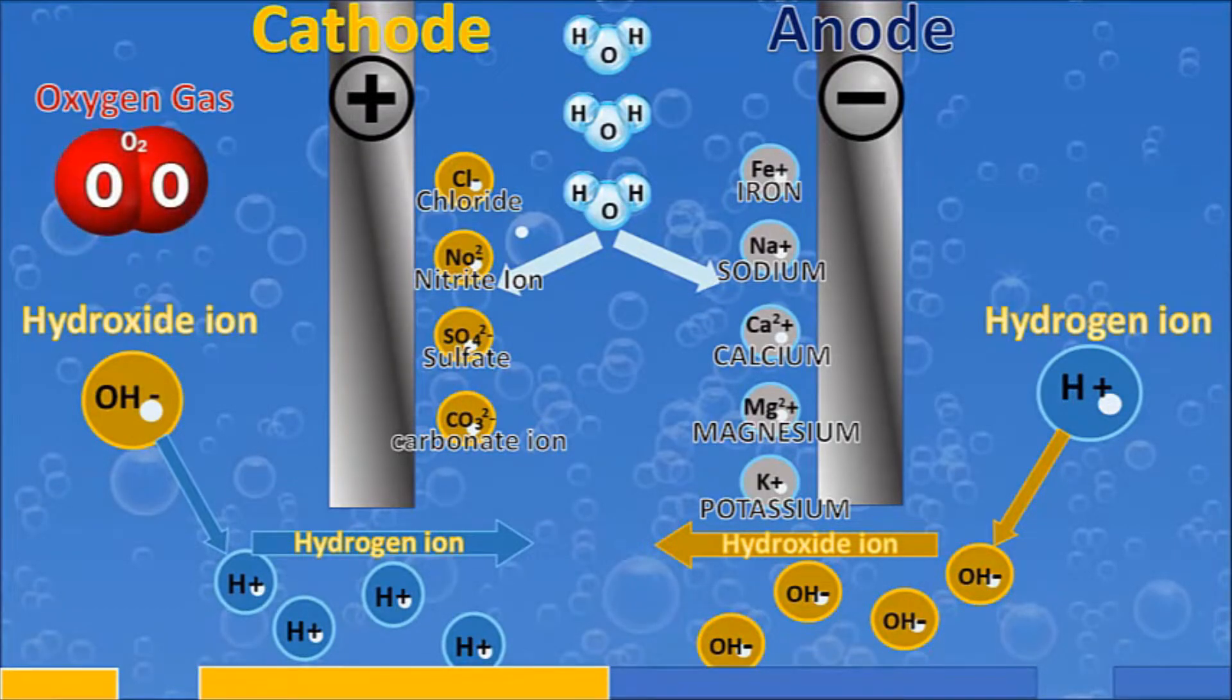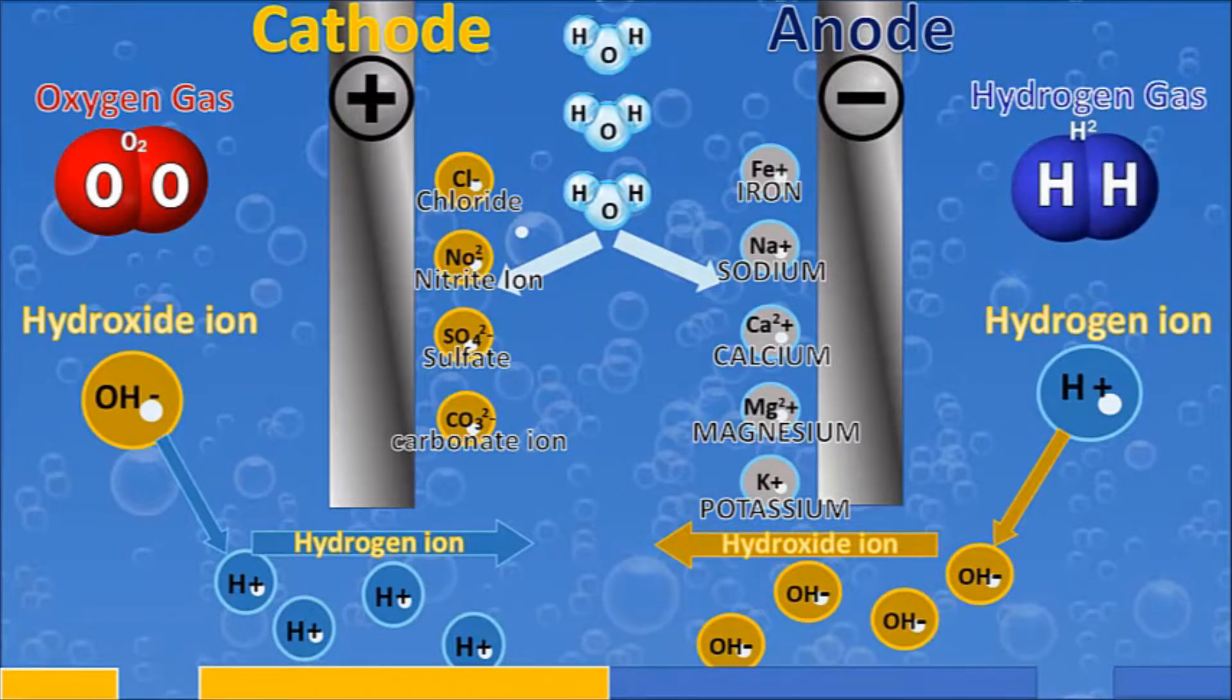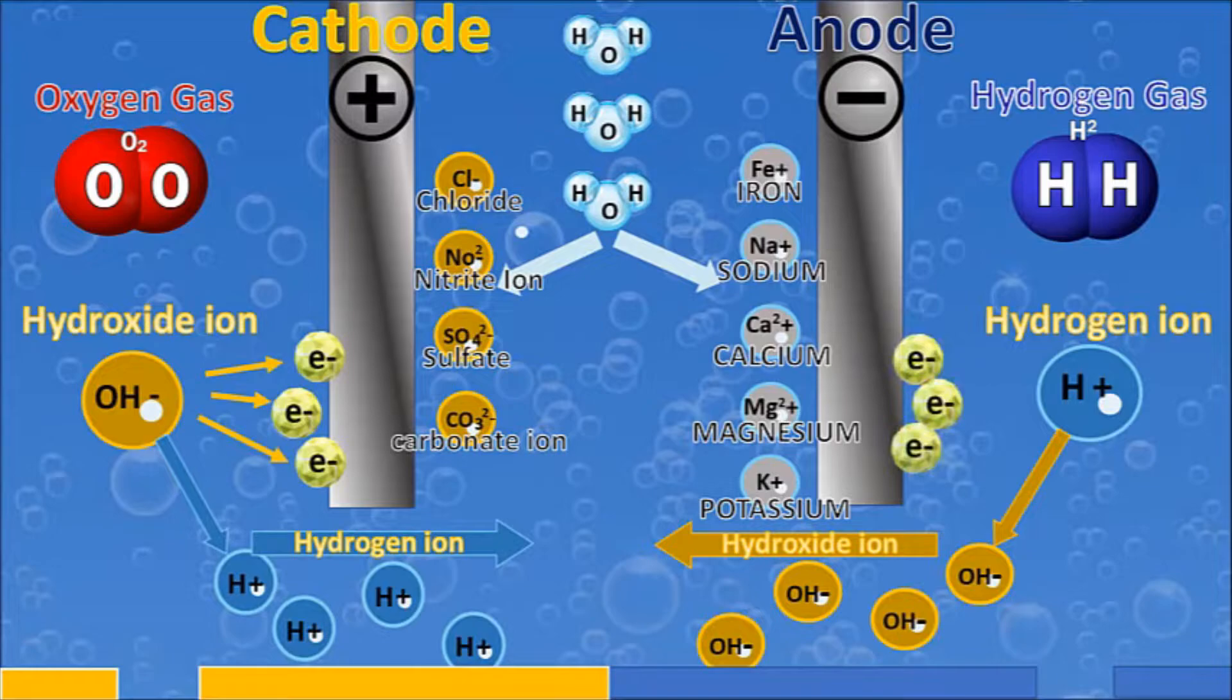This happens... what happens then is we're creating this oxygen gas on this side, and on the other side we're creating this hydrogen gas. So electrolyte-reduced water is happening right in front of us, and the way we create this hydrogen ion is we release the electron that's in this molecule.